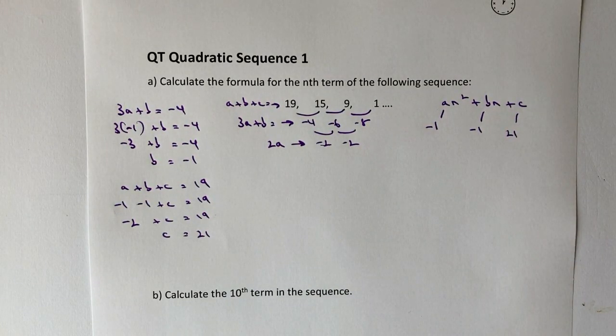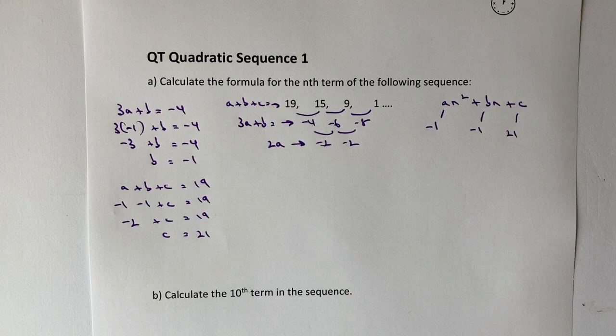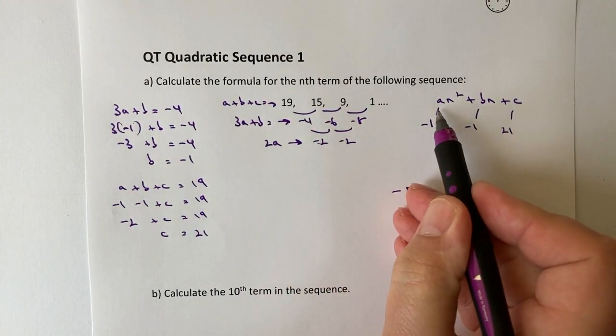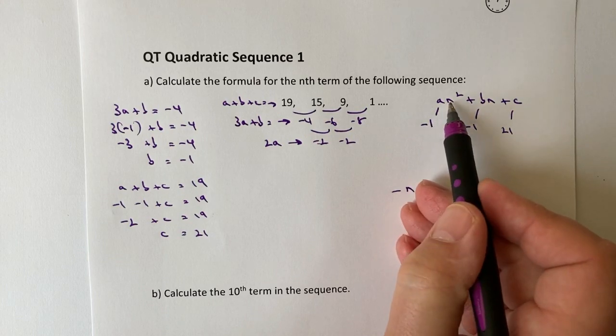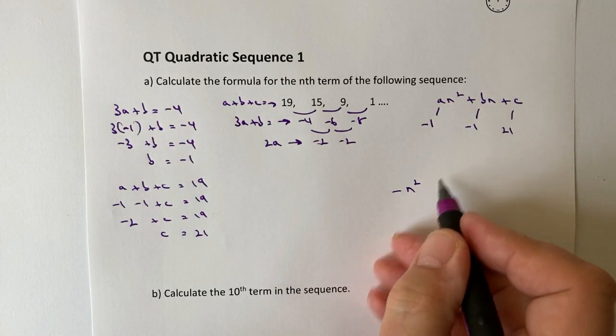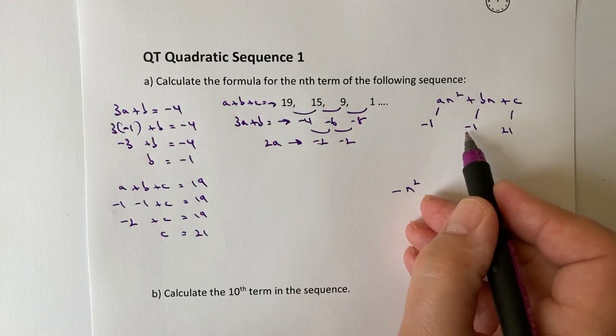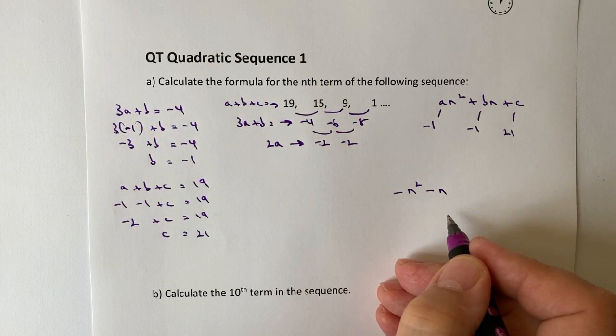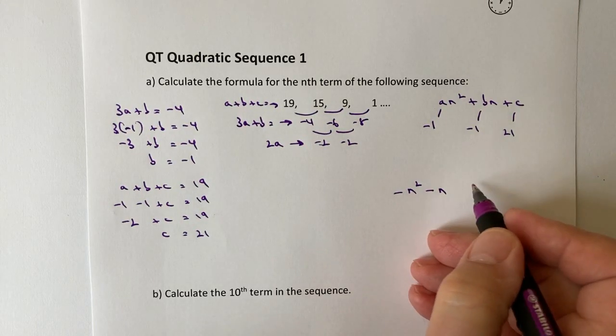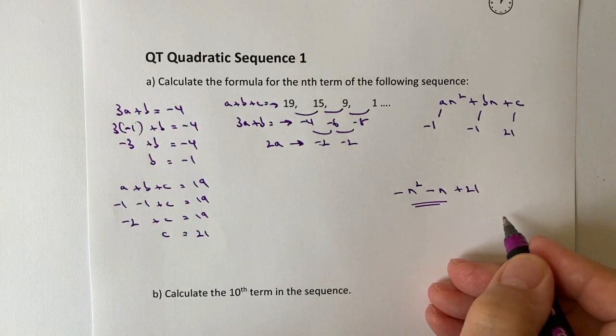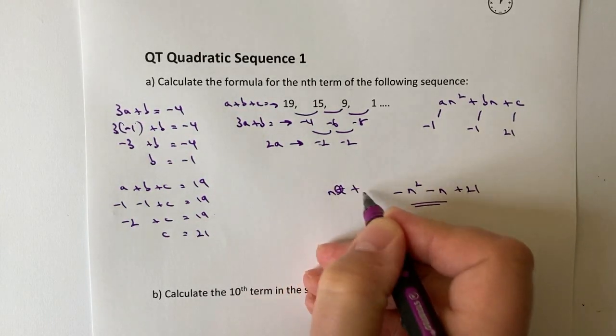So I can write out now the nth term for this formula as minus n squared. Remember, I don't need to write minus 1n squared. I can just write minus n squared. And again, plus bn is going to be minus 1b, so I'm just going to write that as minus n. And then I'm also going to write plus 21. And that would be the formula for the nth term.